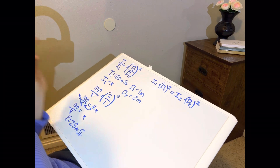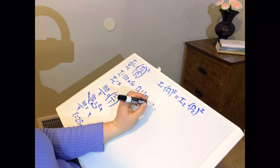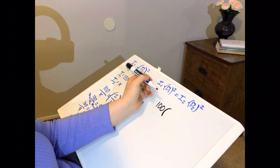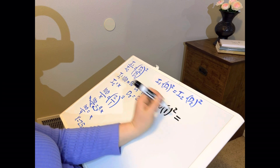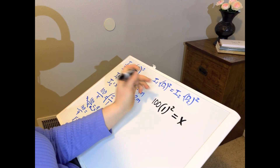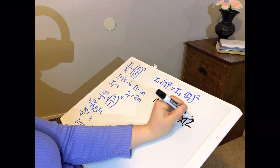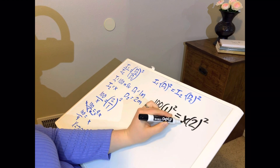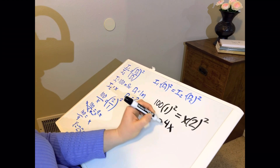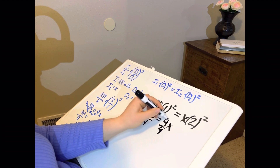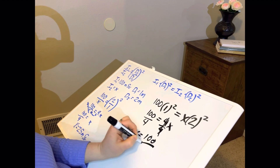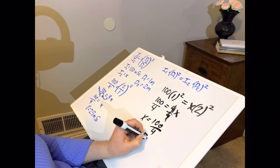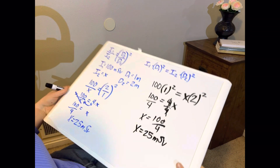Let's solve that same equation using the second formula. Our original intensity is 100, times our first distance of 1, squared. That equals x times our second distance of 2, squared. So 1 squared is 1, times 100 is 100, equals x times 2 squared, which is 4x. Divide both sides by 4 — x equals 100 divided by 4, and x equals 25 millisieverts. Same result.